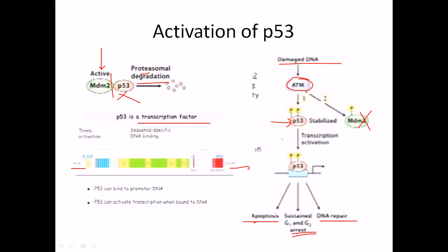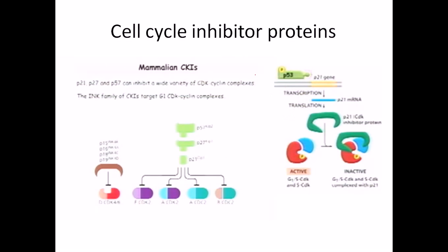p53 is also called a tumor suppressor protein because in tumor cells there is no maintenance of cell cycle and cell growth. p53 blocks the proliferation and rapid cell growth, thus blocking tumor growth. There are other cell cycle inhibitor proteins — p53 is the master of all of them. We also have p27 and p21. p21 is also an important transcription factor that can block the cell cycle.